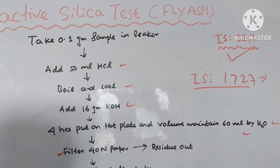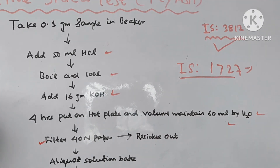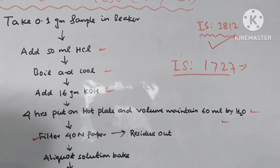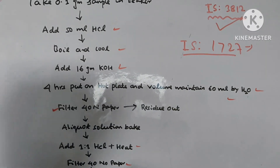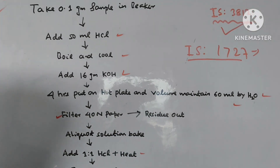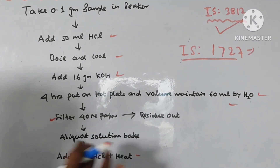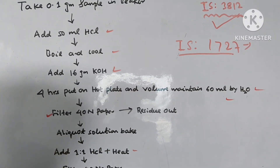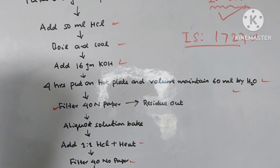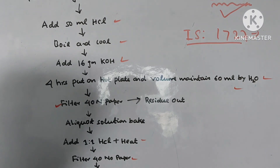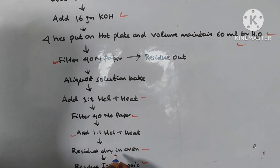Take 0.1 gram sample in the beaker. Add 50 ml HCl, then small boil and cool. Add 60 gram KOH to that solution and maintain the volume to 60 ml. Minimum 4 hours on the hot plate. Then filter in the filter paper — after filtering, the residue is obtained. The aqueous solution is baked. After baking, add 1 to 1 HCl and heat. After filtering, add 1 to 1 HCl with small heat also. Then residue dry in the oven.